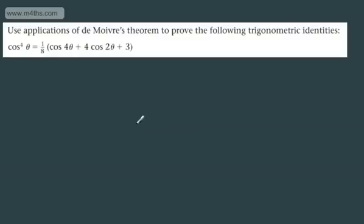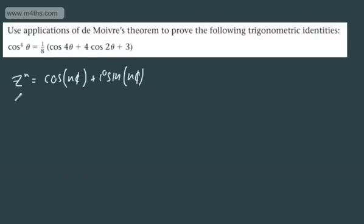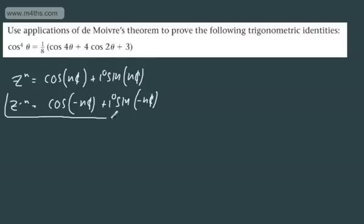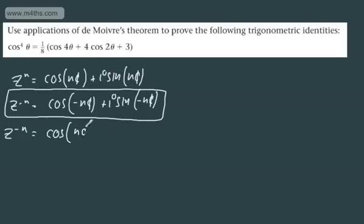In this video, we're going to continue our work looking at De Moivre's theorem to prove trig identities. Let's go back to something we learned some time ago. If we've got z to the n, we can write this as cos(nθ) plus i·sin(nθ). If we have z to the negative n, we have cos(−nθ) plus i·sin(−nθ). And using our rules of odd and even functions, z to the negative n equals cos(nθ) minus i·sin(nθ). If you need to review that section, please do.